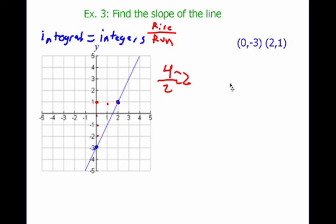Now the other way of doing this is to use the slope formula. And you need to get used to using the slope formula, because a lot of times you won't have the picture. So if we use the slope formula, we know M equals Y2 minus Y1 over X2 minus X1.